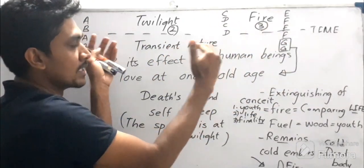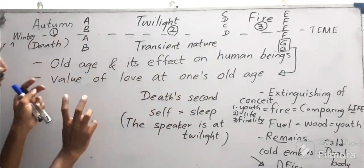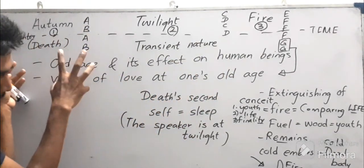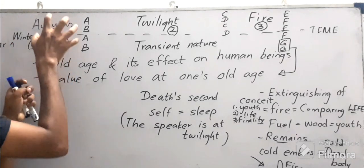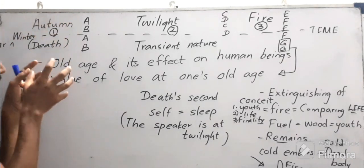When it comes to the analysis part of this sonnet, the autumn means near death—that means we are close to death.